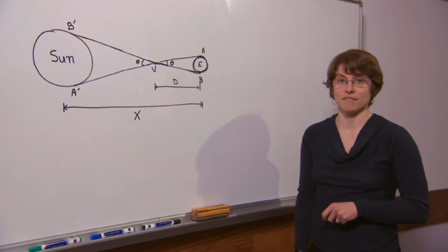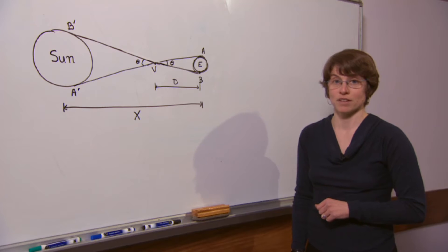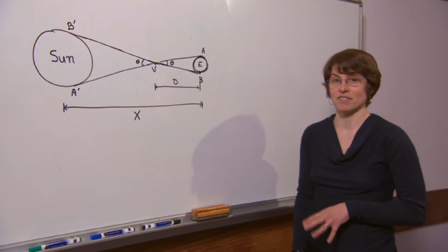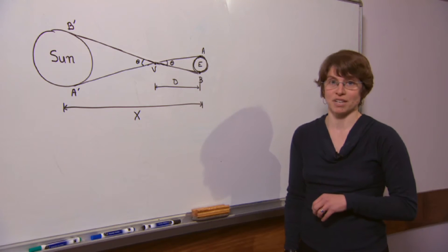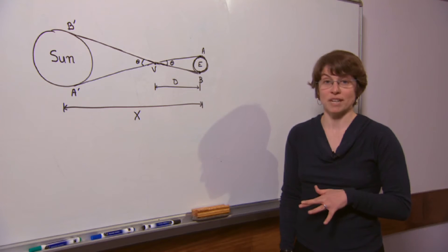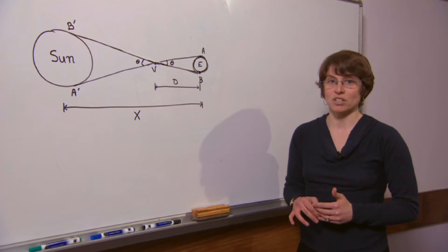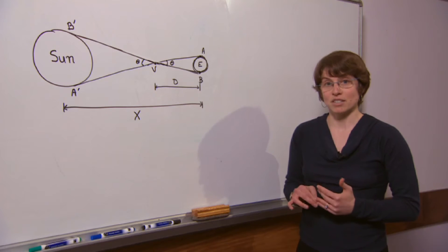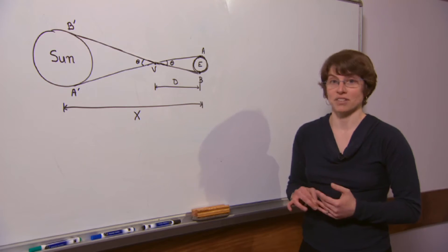The next transit of Venus will occur at the beginning of June 2012. Now it's not just the rarity of this event that makes this scientifically interesting. In the past scientists have used the transit of Venus to answer a fundamental question. What is the distance between the earth and the Sun?